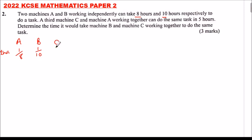We don't know the rate of C, so let's just say C can do the work in 1 hour at a rate of 1/X. But we are told that machine C and machine A working together can do the task in 5 hours.